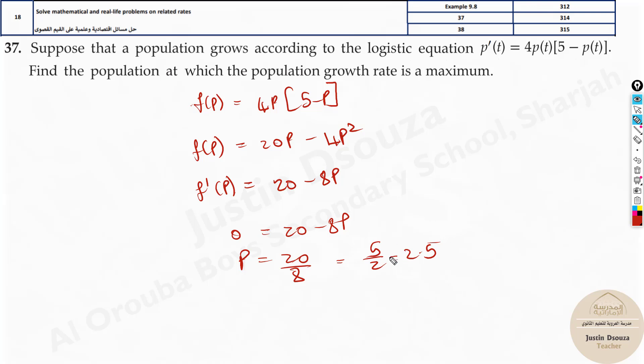Now, how do you check whether it's maximum? So you can do double derivative. f double derivative of p equals, I'm just directly doing it over here, minus 8. So minus 8 is less than 0. So you can say it is concaving.